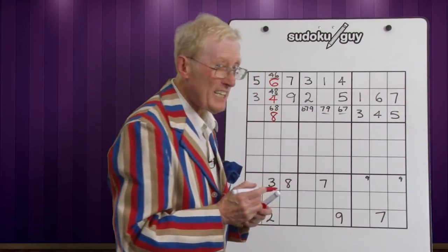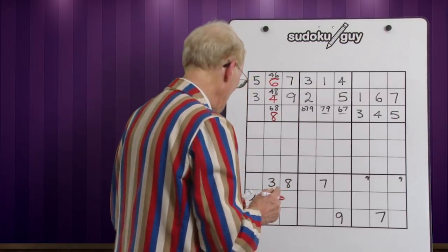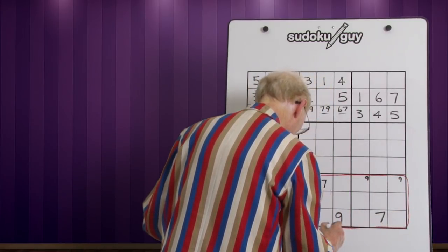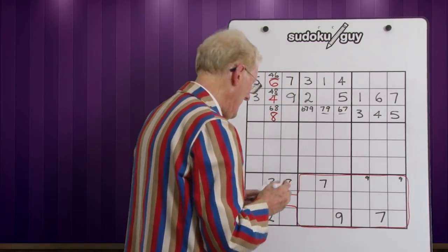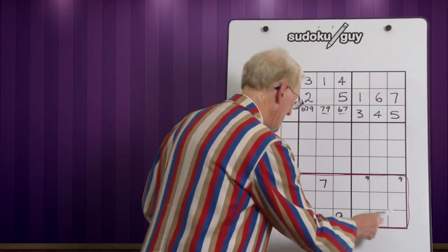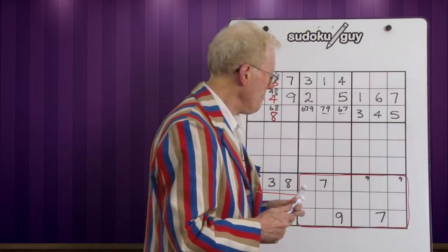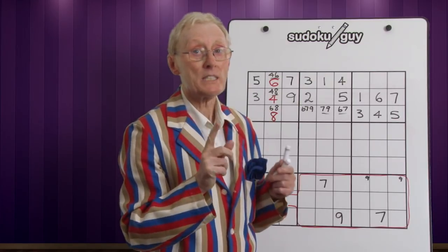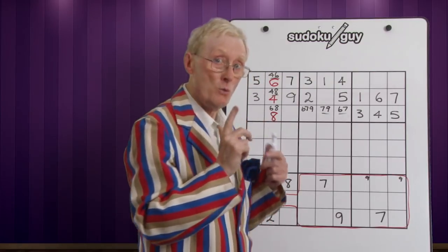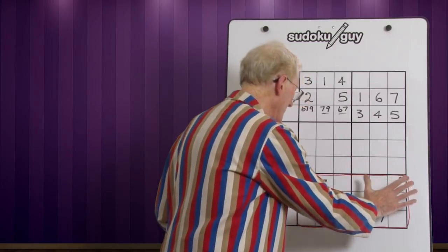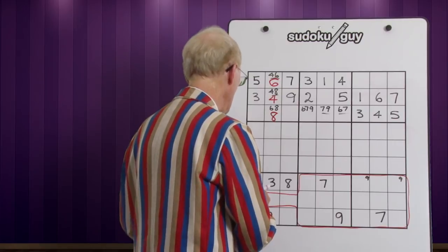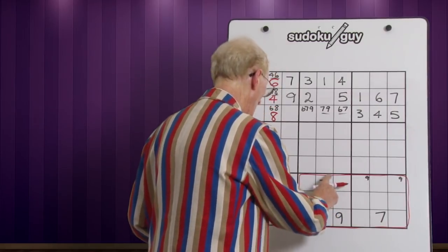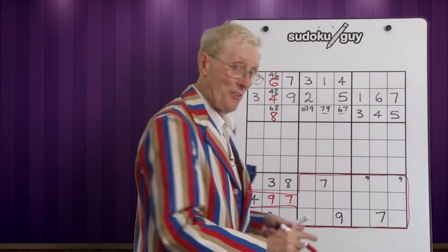Now let's look at this one — it is a mallet on its side. Here is the handle and here is the mallet itself. Here we have a 9-7 and here we have a 9-7 as little numbers. Remember: if you have two little numbers in a block like that, you know they are the only places a 9 can go. If they are the only places a 9 can go, then you assume there's a 9 in here, therefore the 9 has to be in here. And the 7 must be in here — bottom, top, middle; top, bottom, middle. That's the first scenario.